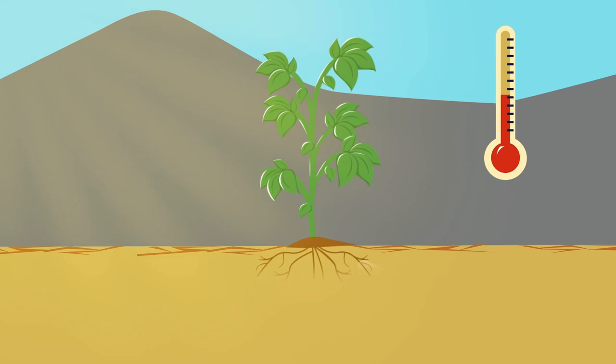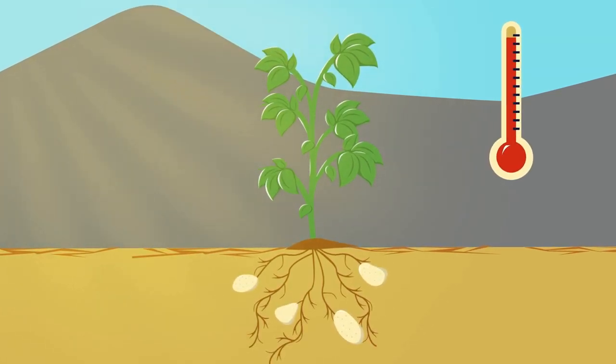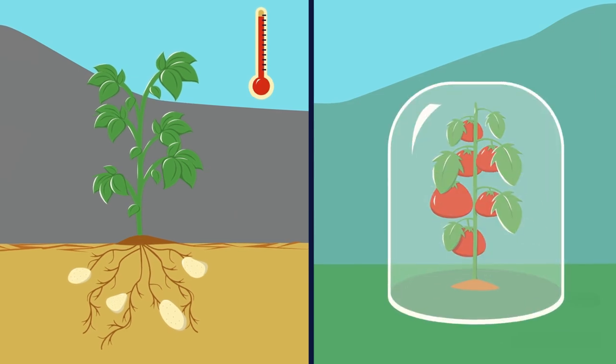This way, you can develop a potato that survives a lengthy drought or a tomato with more defenses against pests.